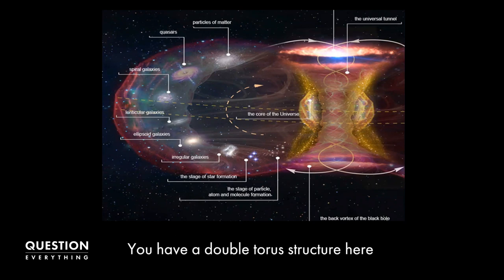You have a double torus structure here. So you've got the expansion out from the disk, from the core,